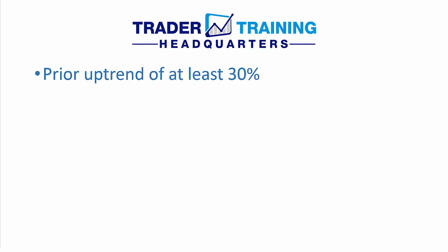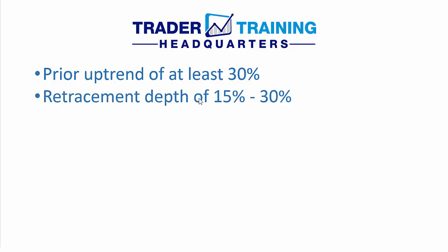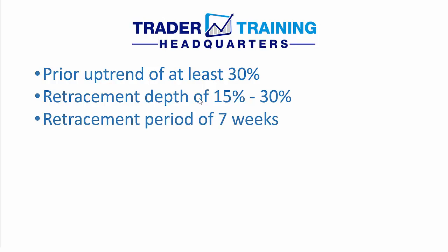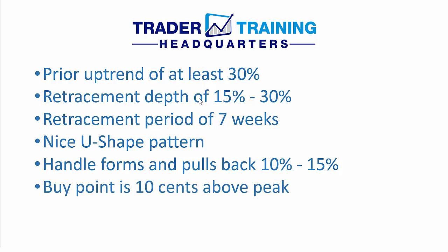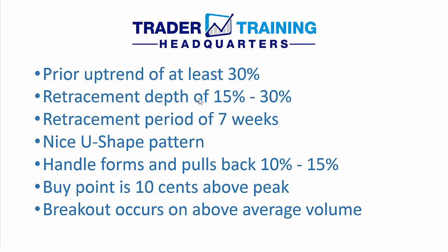Let's recap the cup and handle pattern. The prior uptrend should be at least 30%. Retracement depth of 15 to 30% from the peak to the bottom of the cup. There should be a retracement period of at least 7 weeks long — so from peak to peak, a minimum of 7 weeks. It should be a nice U-shaped pattern. The handle should form and pull back 10 to 15% from that right hand peak. You should enter a buy point 10 cents above the peak, and the breakout should occur on above average volume.